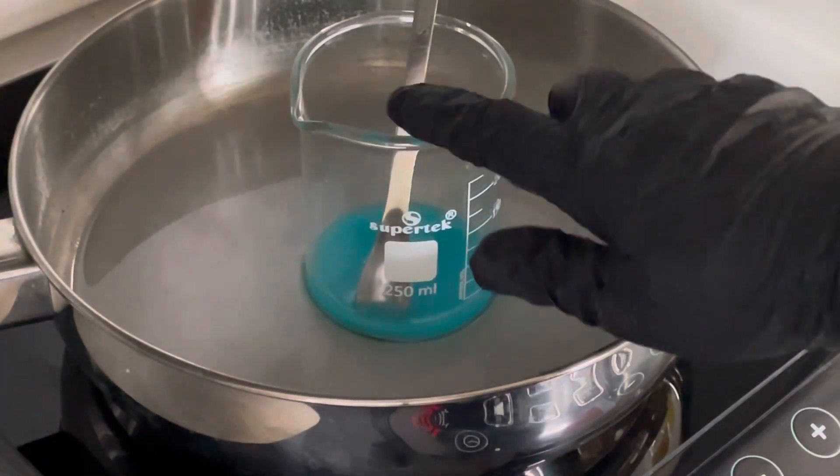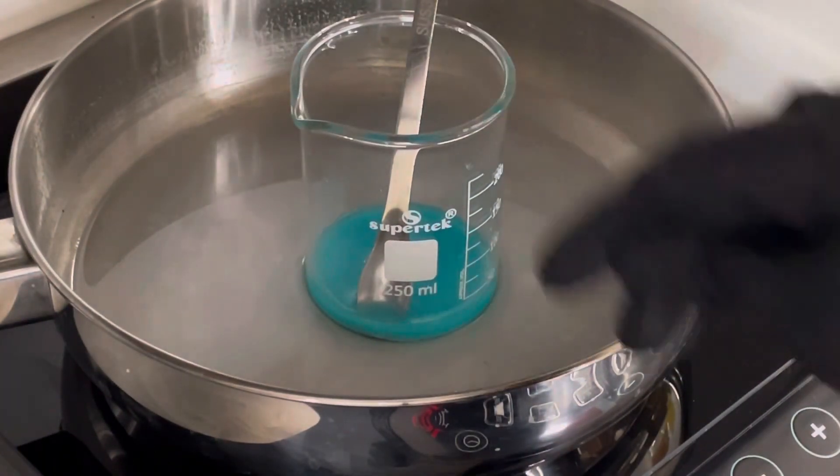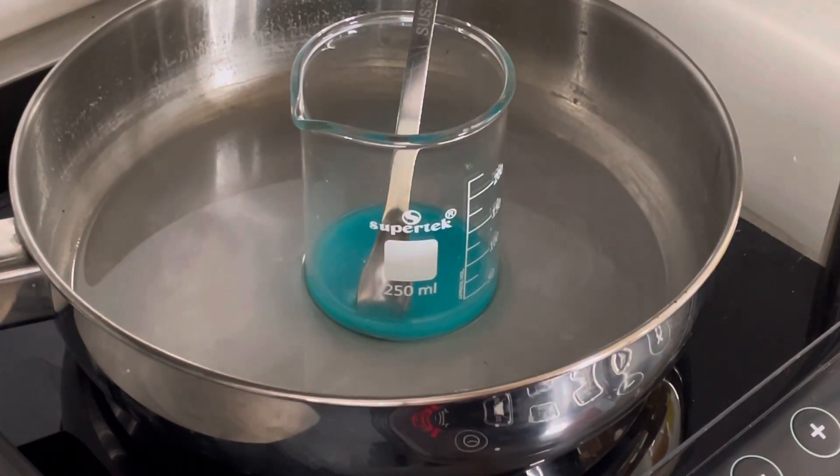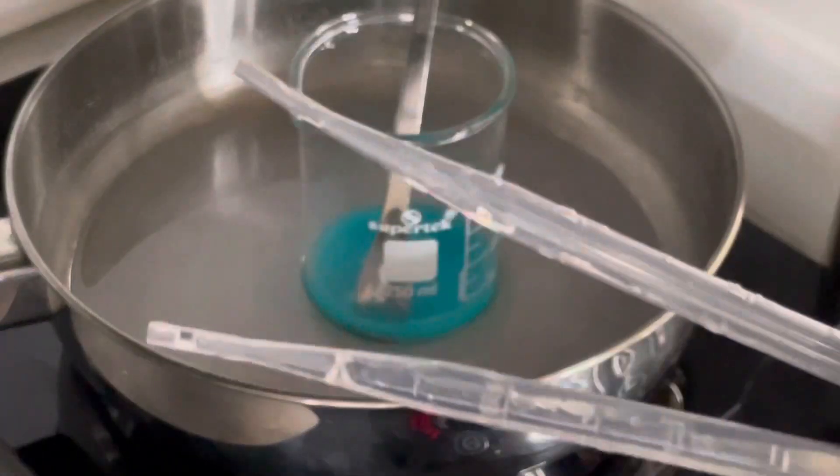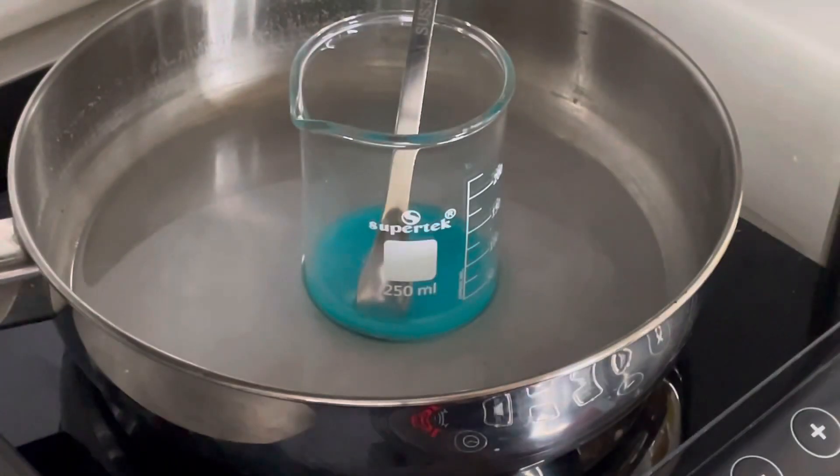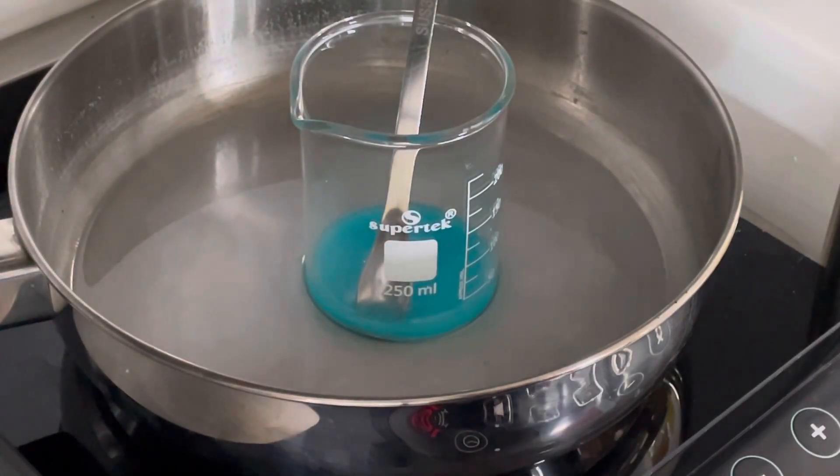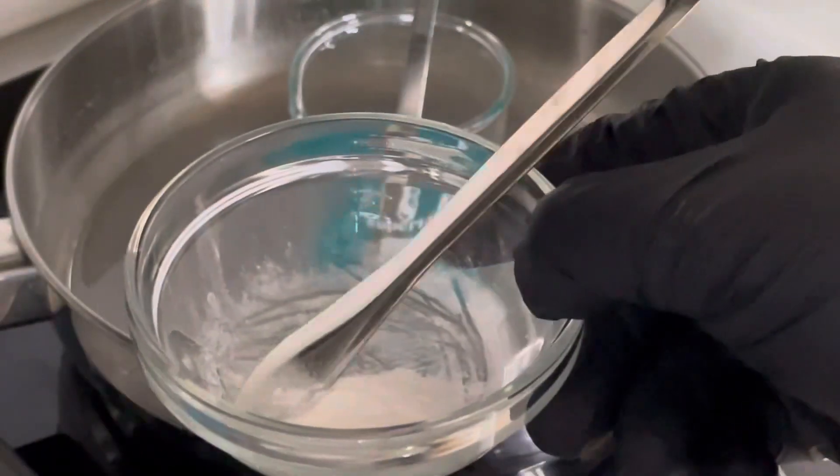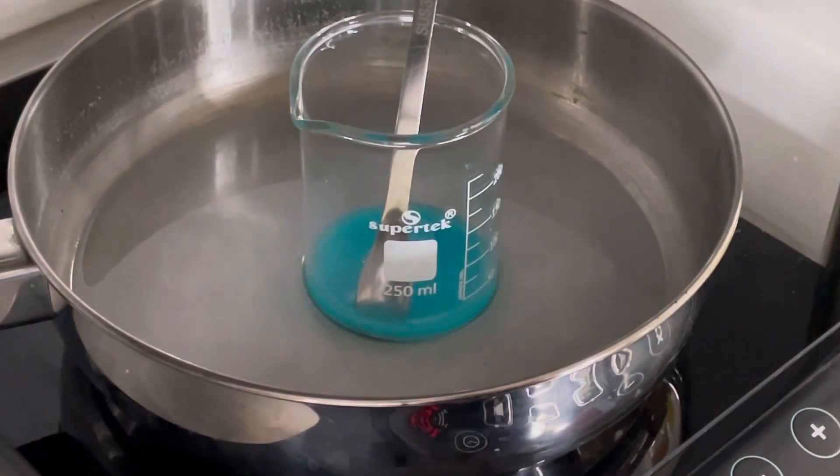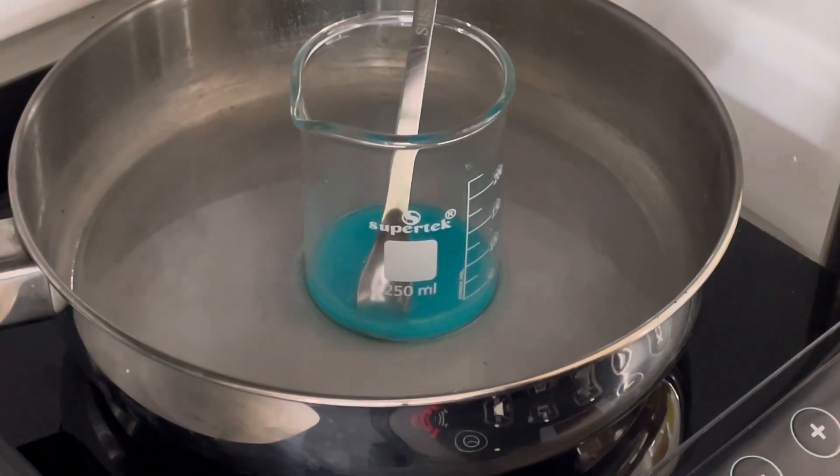So this beaker here has everything except for the sodium stearate, preservative and fragrance oil. So we're going to heat all of that up, we'll call that phase A, let that get to temperature and then we can start adding our sodium stearate just as we did before.